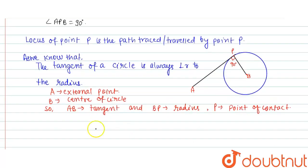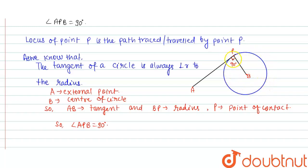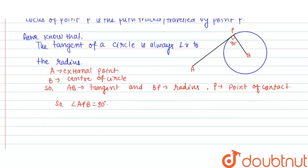So angle APB is equal to 90 degrees. For angle APB to be 90 degrees, the path traced by point P is a circle, because P lies on the circumference of the circle. Hence, the locus of point P is a circle.